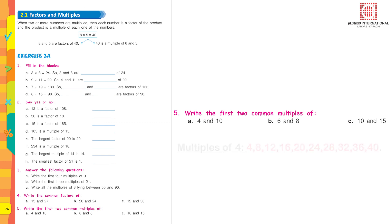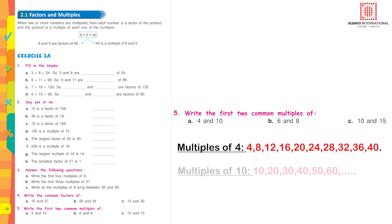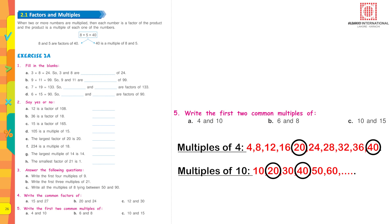Write the first two common multiples of 4 and 10. Multiples of 4: 4, 8, 12, 16, 20, 24, 28, 32, 36, 40. Multiples of 10: 10, 20, 30, 40, 50, 60. The first common multiple is 20 (4 × 5 = 20 and 10 × 2 = 20). The second is 40 (multiple of both 4 and 10). So 20 and 40 are the first two common multiples.